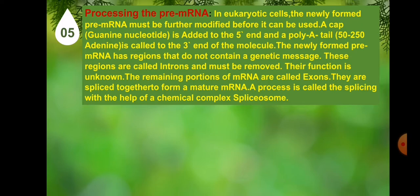Processing the pre-mRNA. In eukaryotic cells, the newly formed pre-mRNA must be further modified before it can be used. A cap is added to the 5' end and a poly-A tail is added to the 3' end of the molecule. The newly formed pre-mRNA has regions that do not contain a genetic message — these are called introns and must be removed. Their function is unknown. The remaining portions of mRNA are called exons, which are spliced together to form a mature mRNA. This process is called splicing, with the help of a chemical complex called the spliceosome.